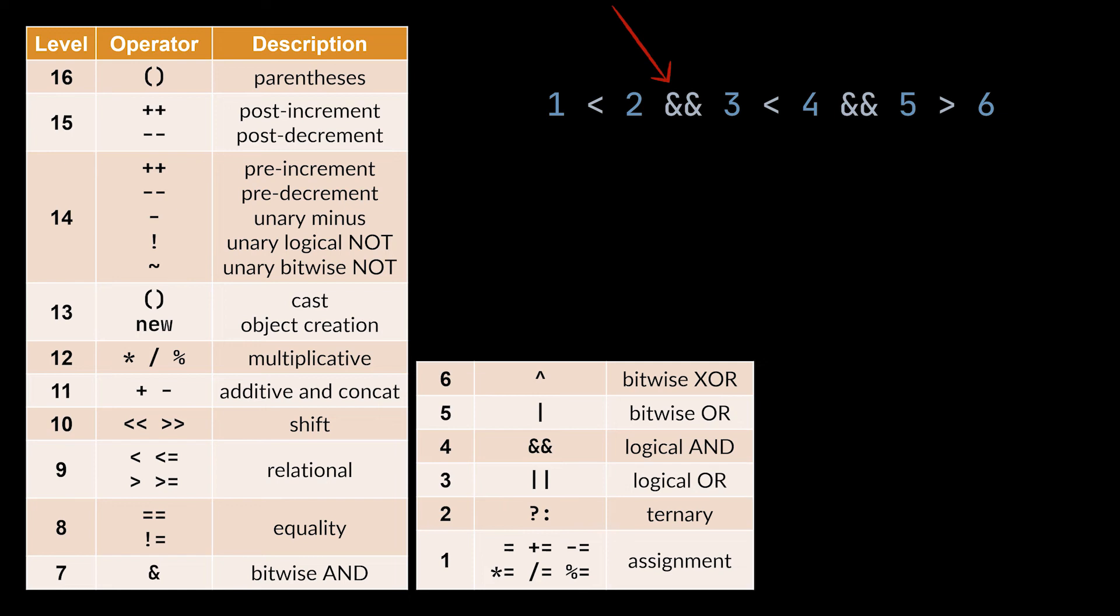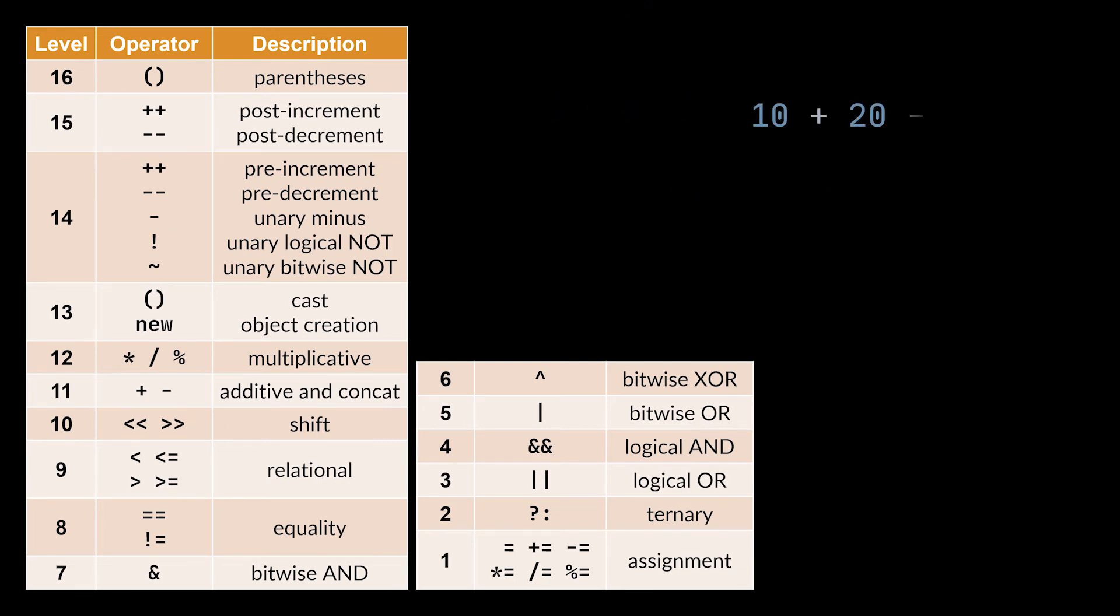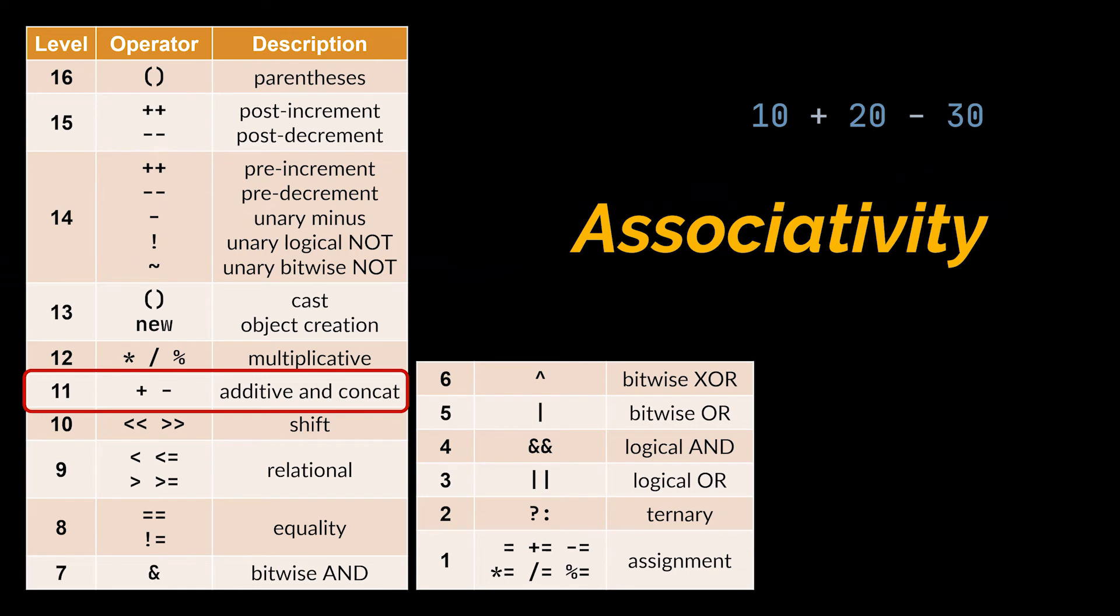However, what if we had something like this? You see, in this example we are only using AND operators. So, should we evaluate the left or the right one before the other? If we were making use of the plus and minus signs, we would know that the addition in this case, or the one to the left, is to be evaluated first, even though they both share the same precedence. Why? Well, because of something called associativity.